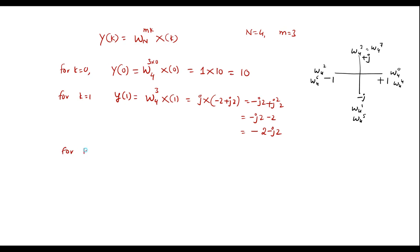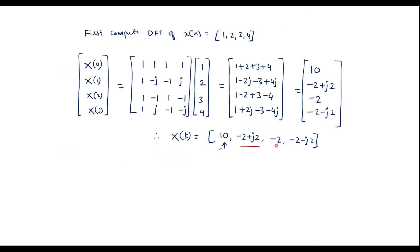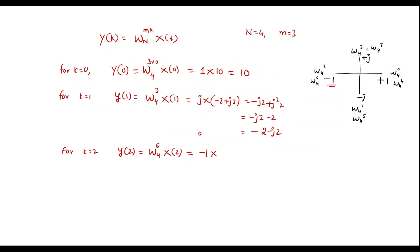For k=2: Y(2) = W_4^(3×2) · X(2) = W_4^6 · X(2). W_4^6 = -1. So Y(2) = -1 × (-2) = 2.